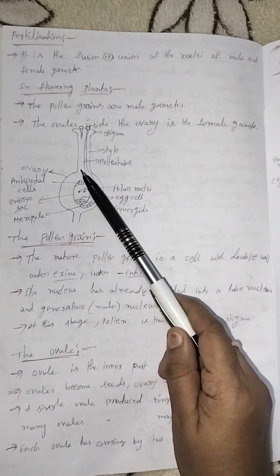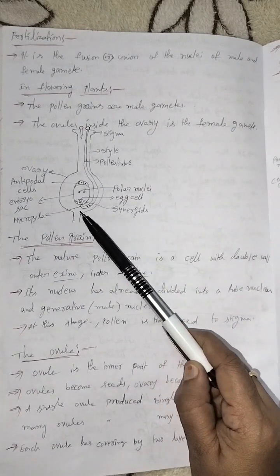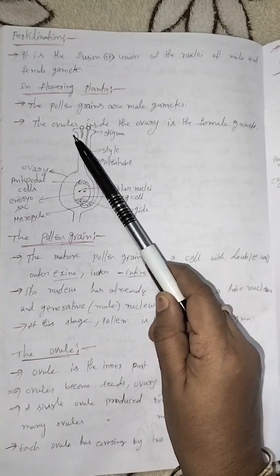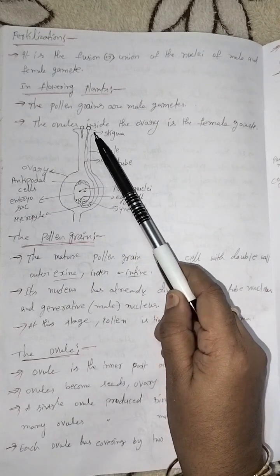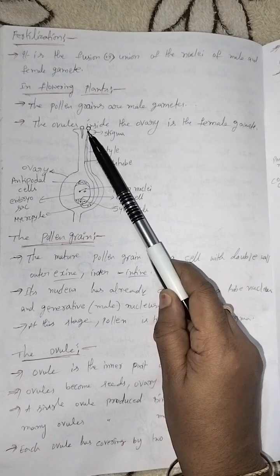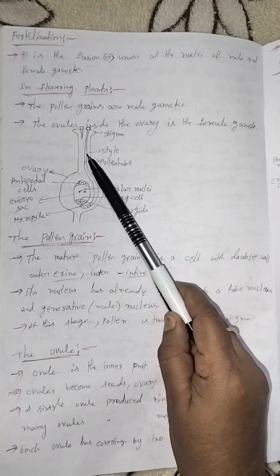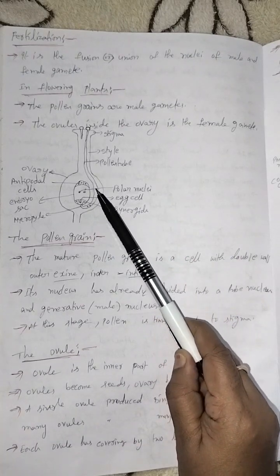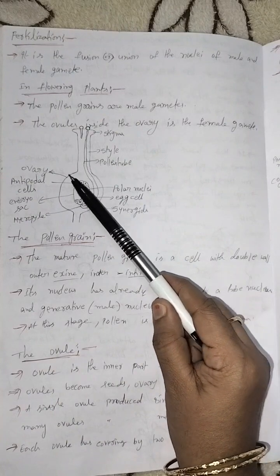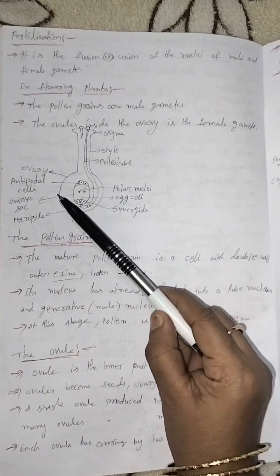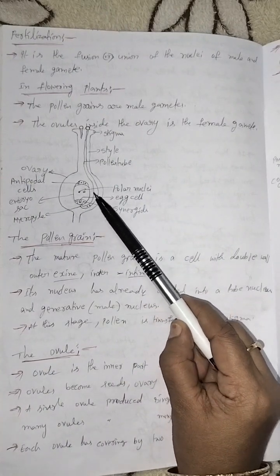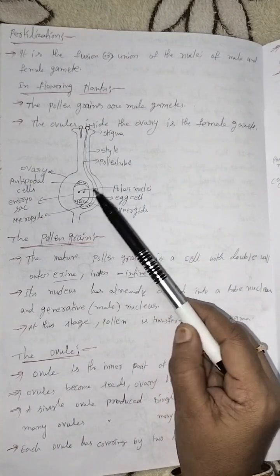This is the ovary, this is the style, this is the stigma, and these are the pollen grains. The pollen tube grows from the pollen grain. Inside the ovary there is an embryo sac.